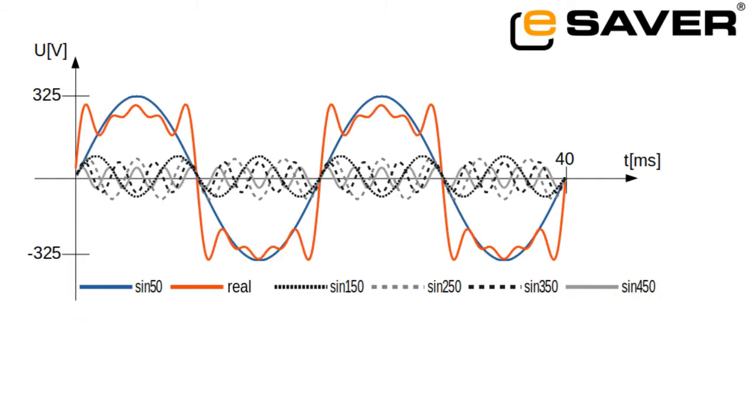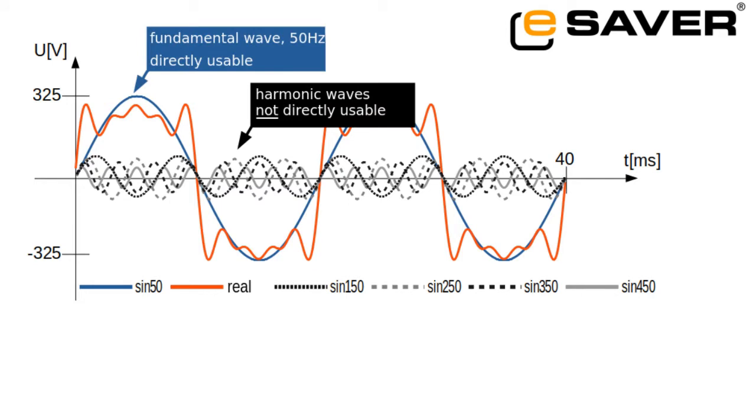Even though the harmonics also contain electrical energy, they are still not wanted in the grid. Because most devices on the grid are designed for 50 Hz, they cannot use the power from the harmonic waves, but only use the power from the fundamental wave.